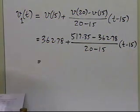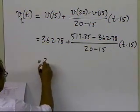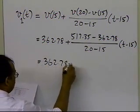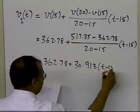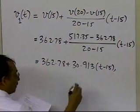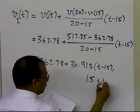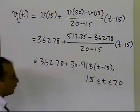So this turns out to be equal to 362.78, plus 30.913, times t minus 15, and the expression, of course, is valid between 15 and 20.